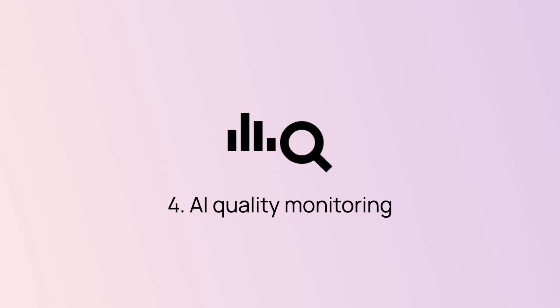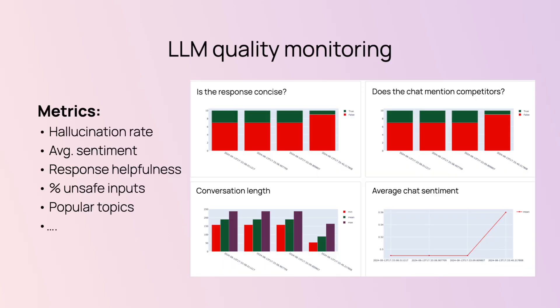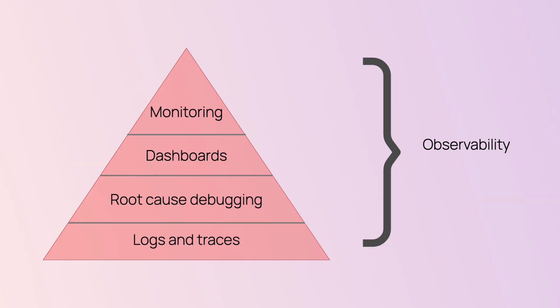And finally, there is AI quality monitoring — that's where it gets interesting. You can evaluate live responses for things like helpfulness, safety, or maybe track popular topics. Observability and monitoring are often used interchangeably, but they're not exactly the same thing. Monitoring is about tracking the metrics that you define in advance. Observability is more about getting all the data so that you can answer questions about your application, even the ones that you didn't anticipate. Monitoring is part of observability, but observability is what gives you the full picture.